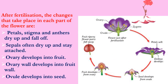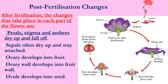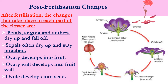Post-fertilization changes: after fertilization, the changes that take place in each part of a flower are — petals, stigma and anthers dry up and fall off; sepals often dry up and stay attached; ovary develops into fruit; ovary wall develops into fruit wall; and ovule develops into seed.